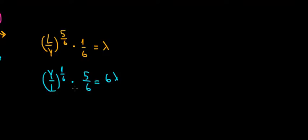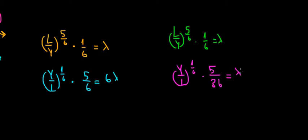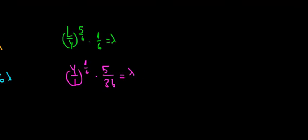We want to isolate lambda on one side, so we divide the second equation by 6. This gives us: l^(5/6) / (6 · y^(5/6)) = λ on top, and y^(1/6) · 5 / (36 · l^(1/6)) = λ below. Now we can use the equation where lambda equals lambda.